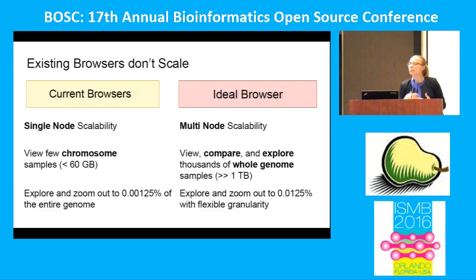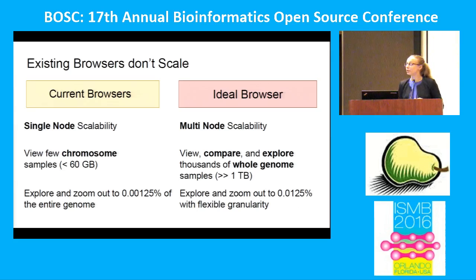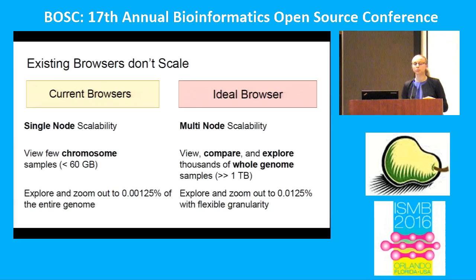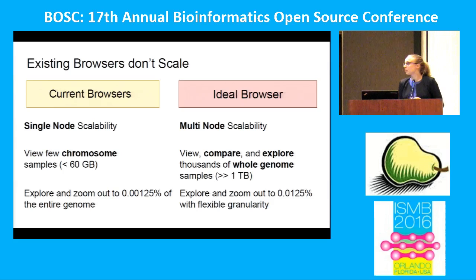Ideally we'd like multi-node scalability that allows us to view much larger files — to view, compare, and explore thousands of whole genome samples. We'd like to zoom and explore larger regions, viewing about 500,000 to a million base pairs and get summary statistics on that region. This is still only about 0.0125% of the genome, but it's still an order of magnitude larger than what current genome browsers can show.